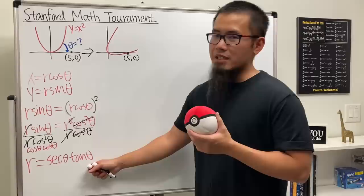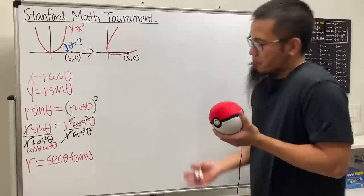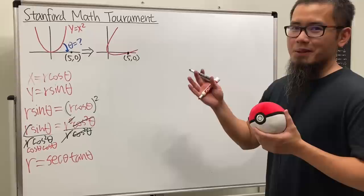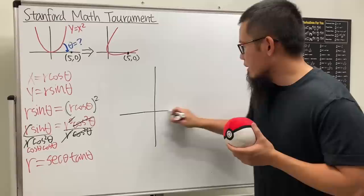But the problem is that this really doesn't help with this question because all of a sudden I don't have x and y to work with. I have to use five and zero. But yeah, so oh well. Anyway, this is how we can do it. We just have to think about what's the rotation.